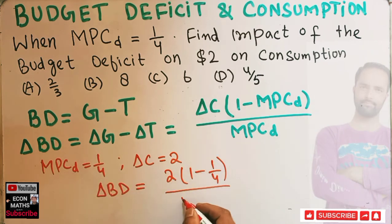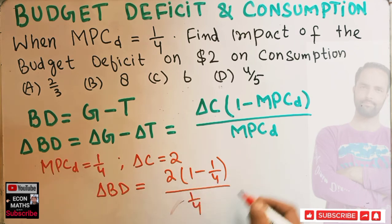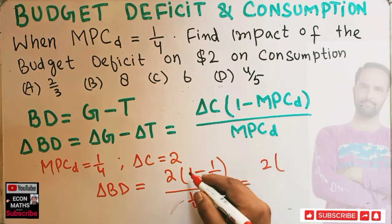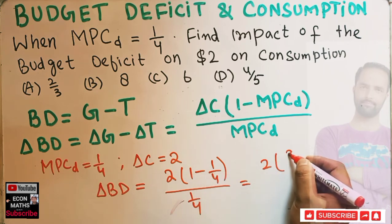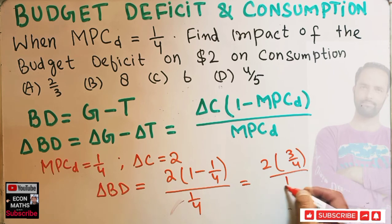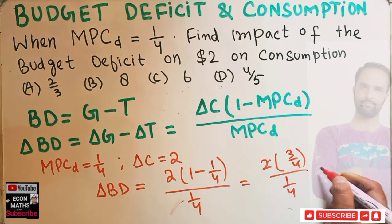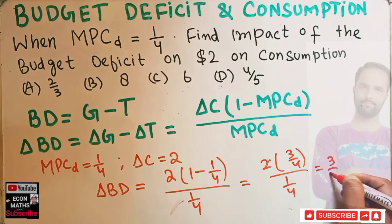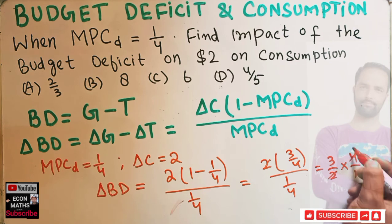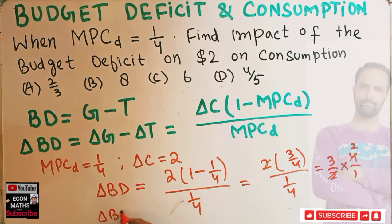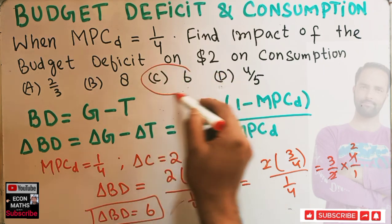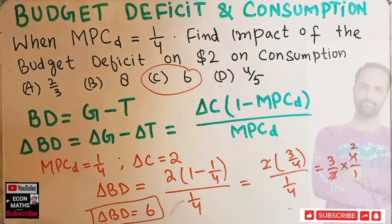Solving this: we have two times (four minus one, that is three upon four) divided by one upon four. Reciprocating, this becomes two times three upon four times four upon one, giving us two times three which equals six. So our budget deficit will change by six dollars. The correct option should be this one. I hope I made myself clear in this video — thank you.